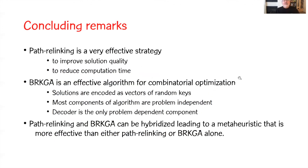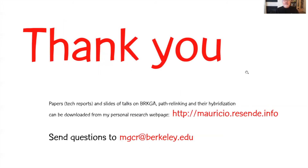Path relinking is a very effective strategy that improves solution quality and reduces computational time. BRKGA is an effective algorithm for combinatorial optimization where solutions are encoded as vectors of random keys. Most components of the algorithm are problem-independent, and the decoder is the only problem-dependent component. Path relinking and BRKGA can be hybridized, leading to a metaheuristic that is more effective than either path relinking or BRKGA alone. Thank you very much for your attention.